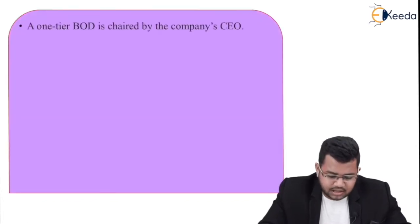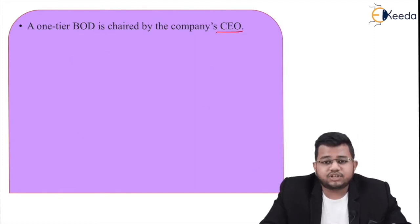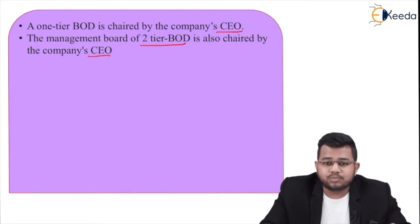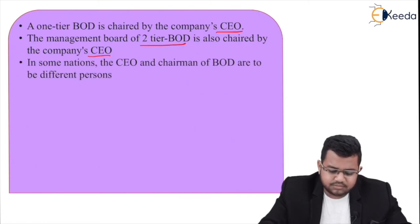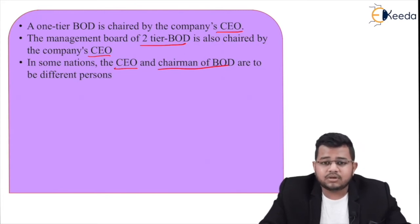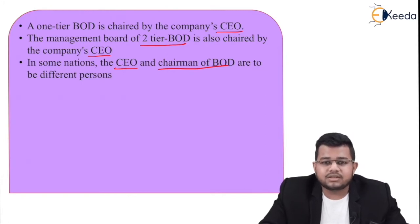A one-tier board is chaired by the company's CEO. Similarly, the management board of a two-tier BOD is also chaired by the company's CEO — not the supervisory board, but the management board. In some nations, the CEO and chairman of the BOD are required to be different persons. Even in India, SEBI has regulations stating that the CEO and the chairman of the board should be separated into two different roles.